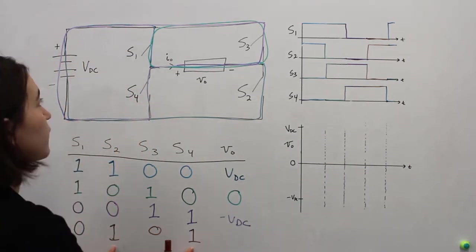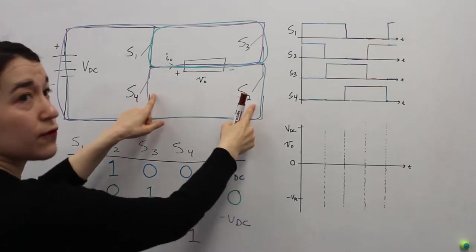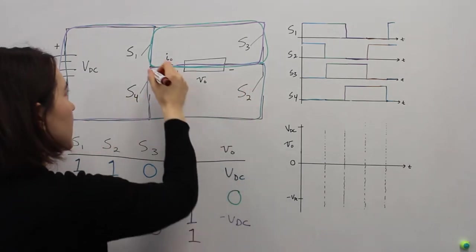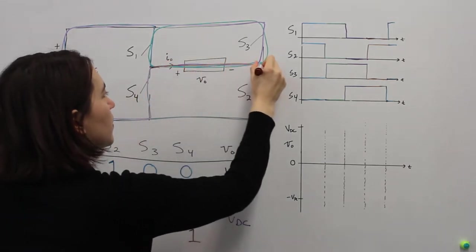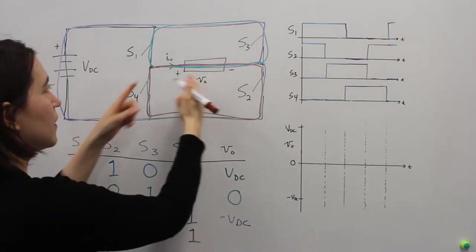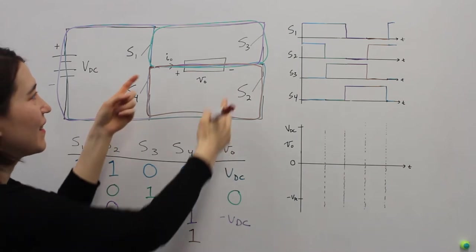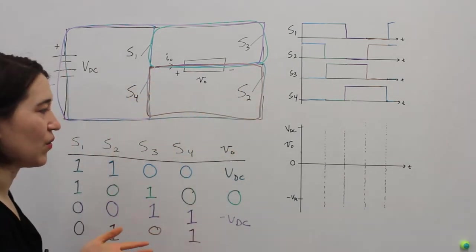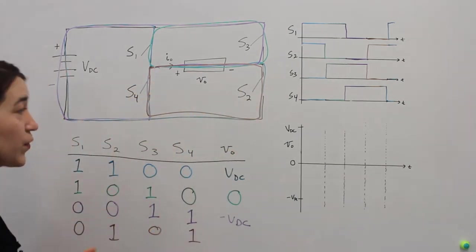We have switch 2 and switch 4 are on. Switch 2 and switch 4 are on. If we follow this through, the current path would be through here, the brown one. Again, this is actually shorting our load, which means that there's no voltage on the output.